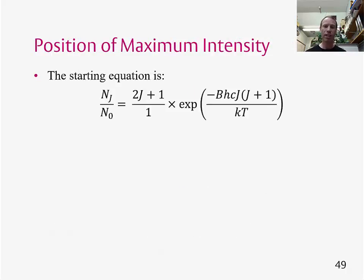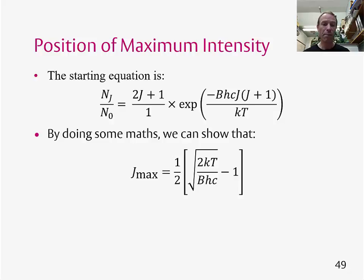So the starting equation is this one here. And by finding a stationary point of this equation, so finding a point at which the gradient of this expression is equal to zero, we can find the value of J for which this curve reaches a maximum. So this Jmax, so the J value for which there is a maximum, is given by this expression here. And this we can do in the classroom session.